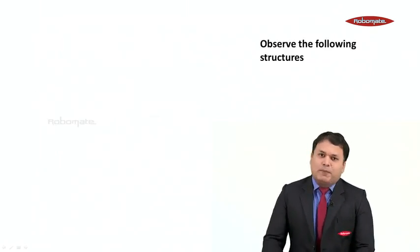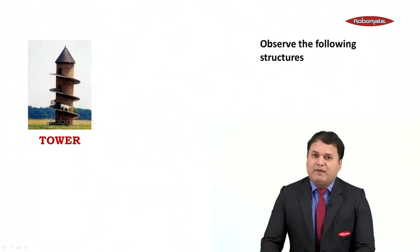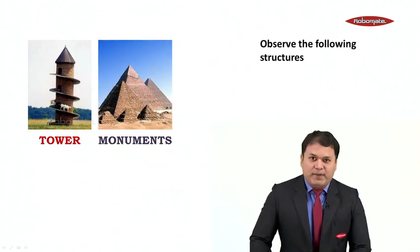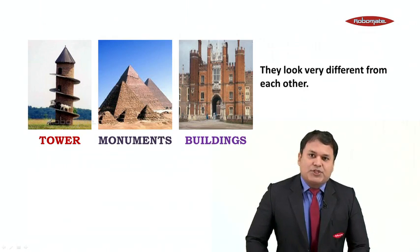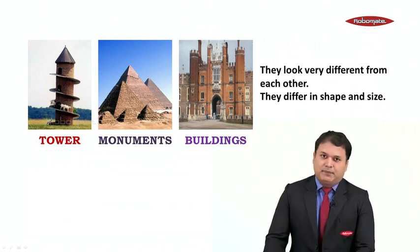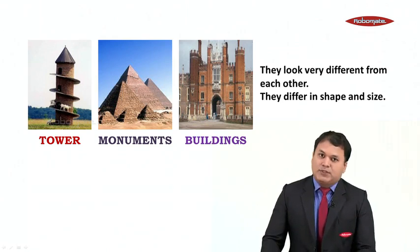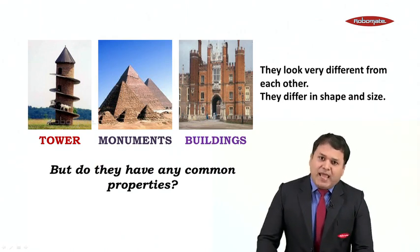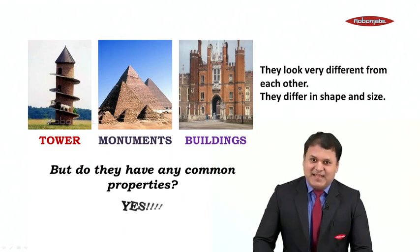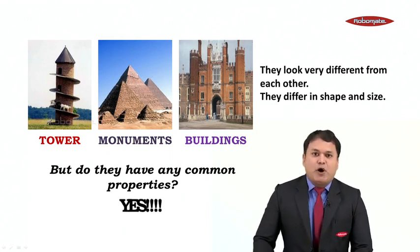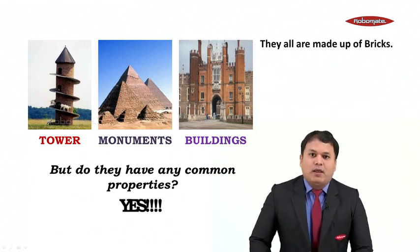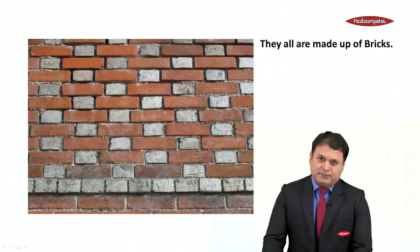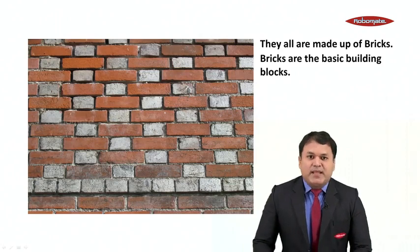Students, just observe the following structures. We have a tower, we have some monuments, we also have some buildings. Now these structures look very different from each other — they differ in shape and also in size. But they do have a basic common property: all these structures are made up of bricks. So we can say that bricks are the basic building blocks of these structures.